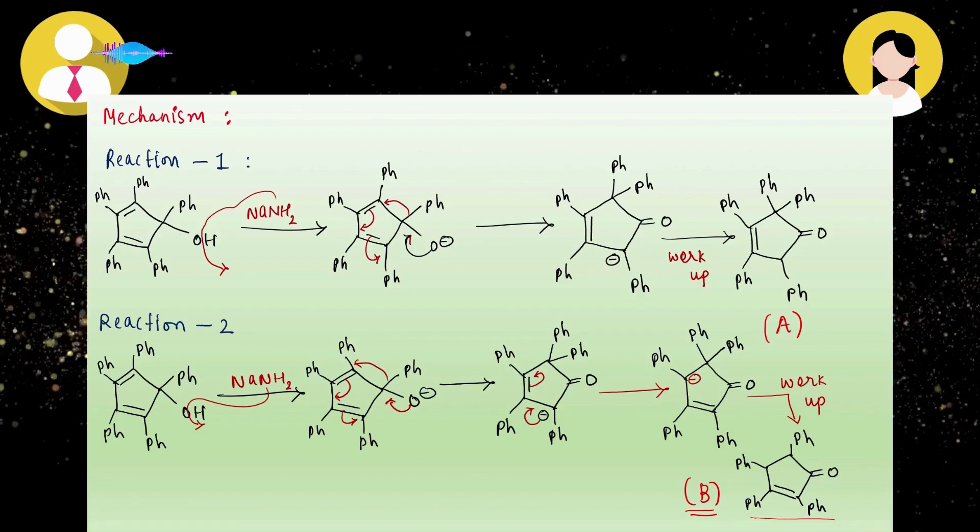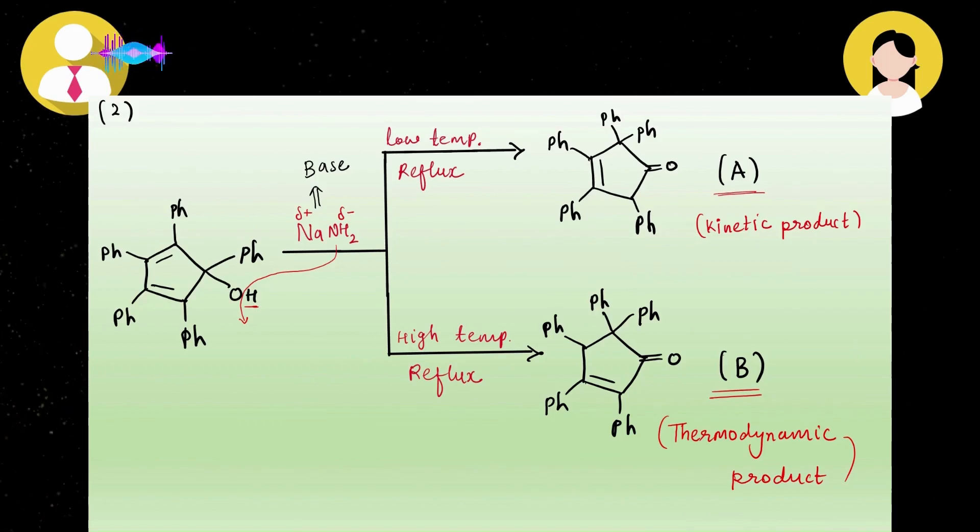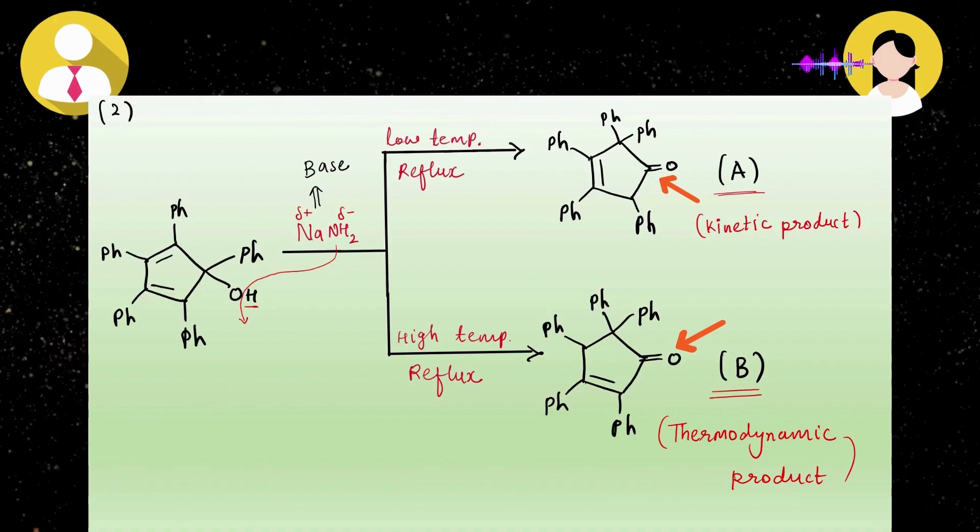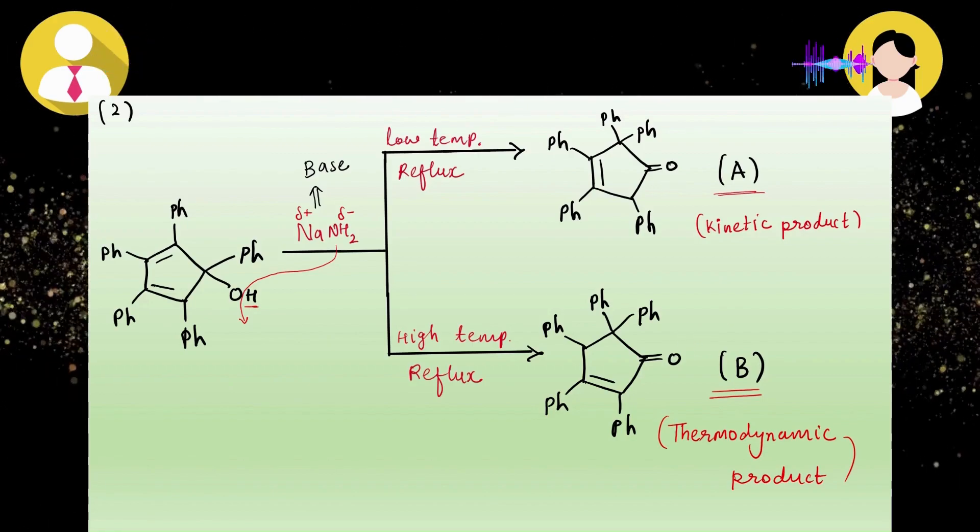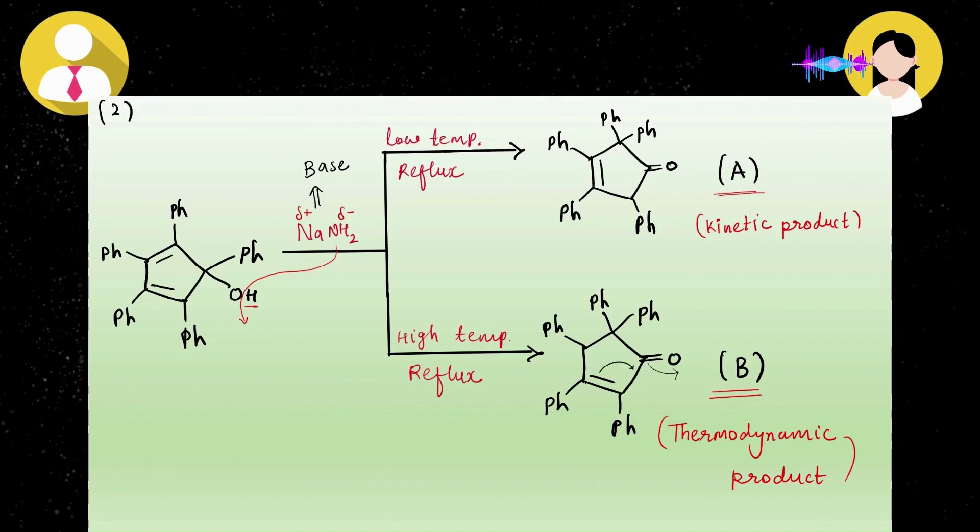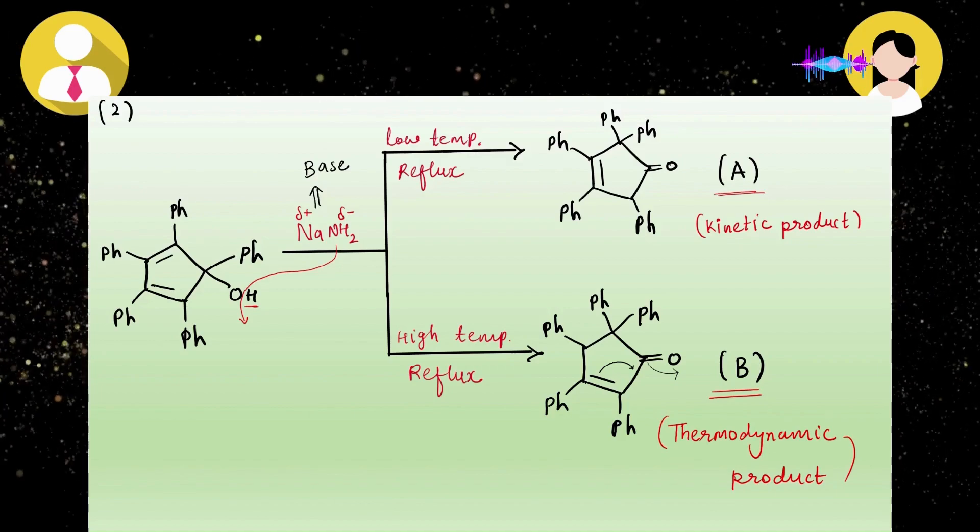He asked me about IR spectroscopy. Can you differentiate these two products on the basis of its IR spectra? I said yes sir, on the basis of its CO stretching frequency we can differentiate these two products. He asked how. I said product B is an alpha-beta unsaturated carbonyl compound and the alpha-beta bond is delocalizing into the anti-bonding orbital of CO (pi star orbital of CO). Because of that reason, CO bond length is increasing.